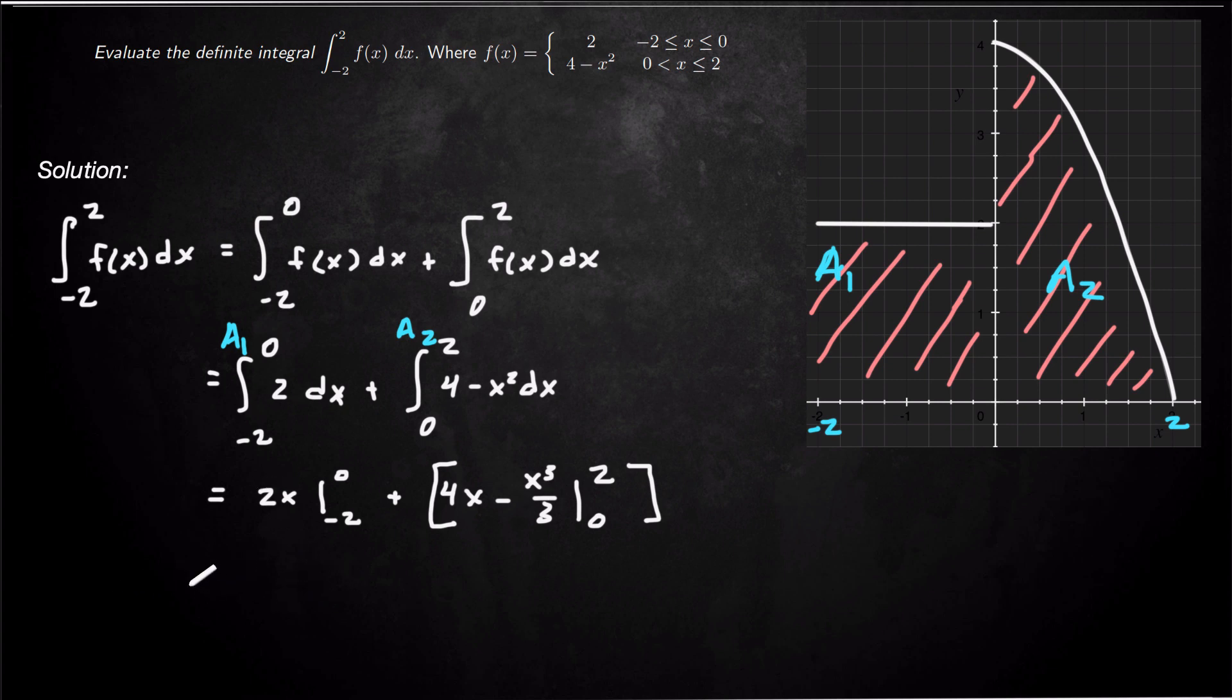So this first one is going to become 2 times 0 minus negative 2 plus 4 times 2 minus 1 third times 2 cubed minus 0 plus 0. So just plugging in those bounds.